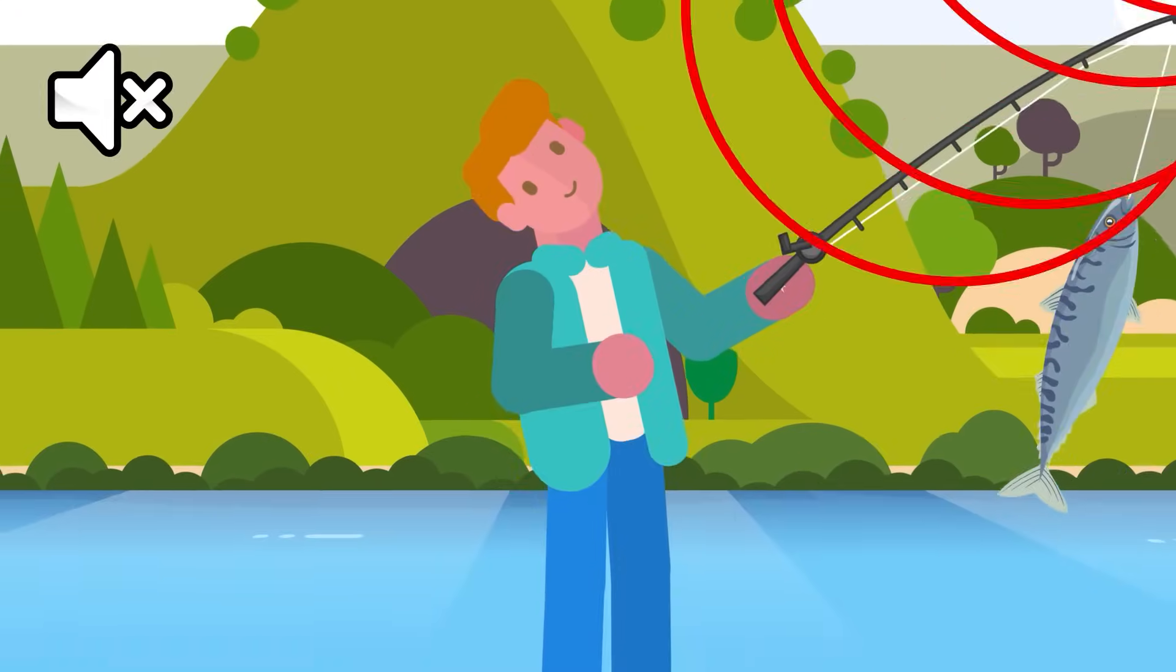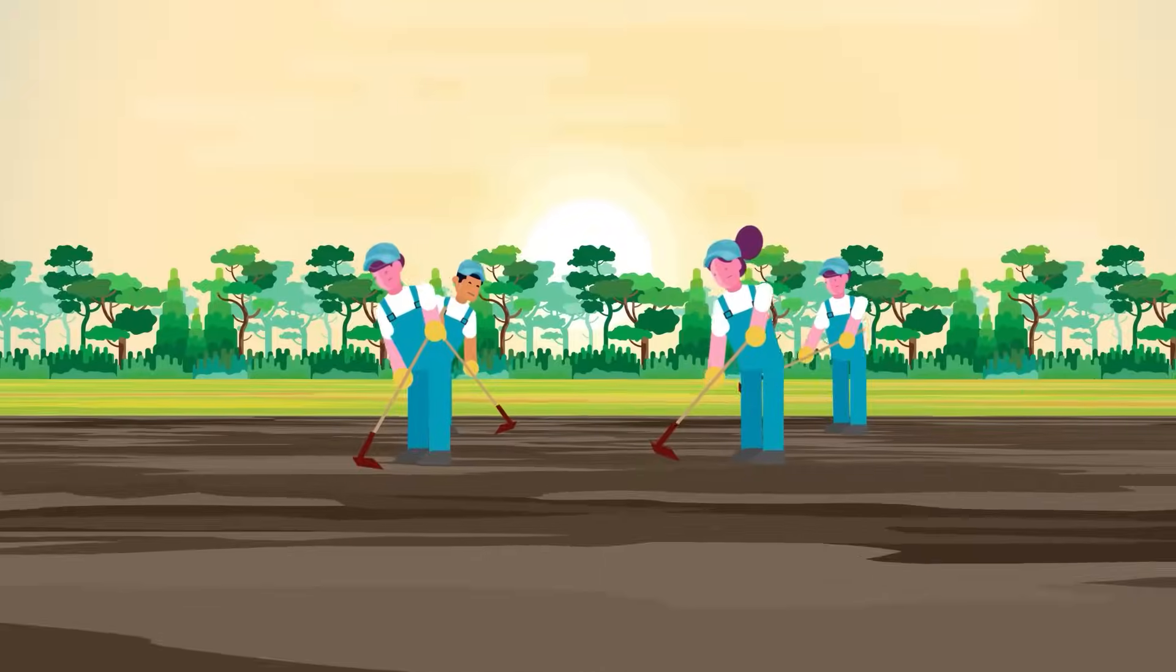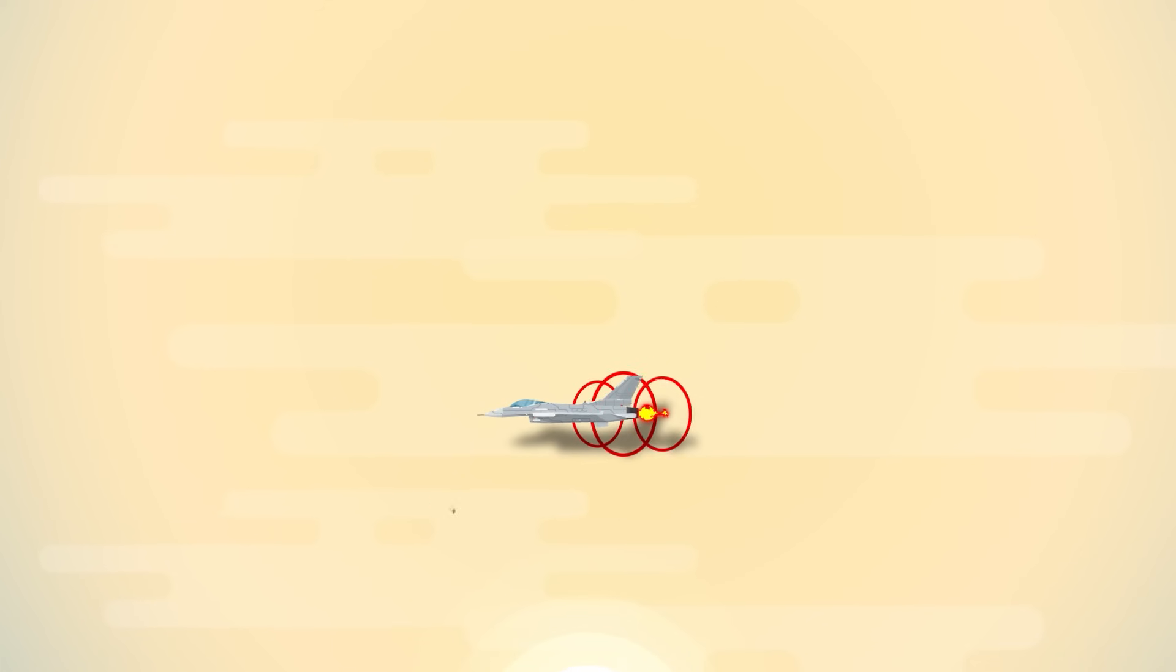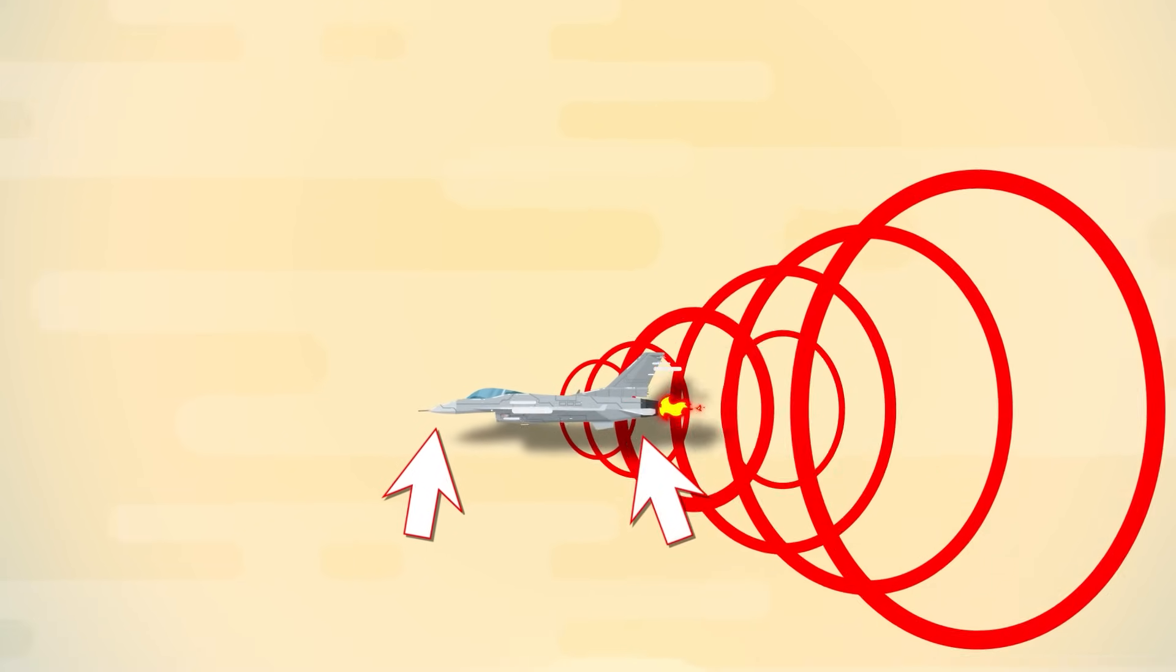This is why an aircraft that is approaching you at Mach speeds appears to be silent until it passes over you. This phenomenon results in a sudden change of pressure between the front and the tail of the aircraft, which results in a shockwave, or what we call a sonic boom.